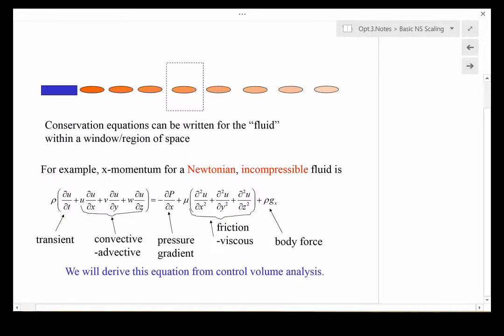To go from a Lagrangian frame of reference to an Eulerian frame of reference requires something called Reynolds transport theorem. The basic idea of Reynolds transport theorem will be identified and discussed in this section.